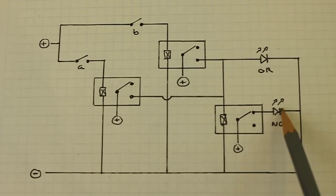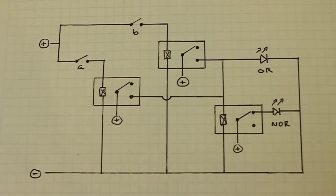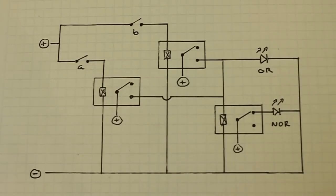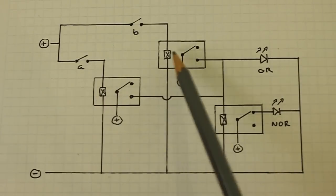Turning off the NOR LED. And now, let's see the real circuit working. The last position, one one, with both switches closed.